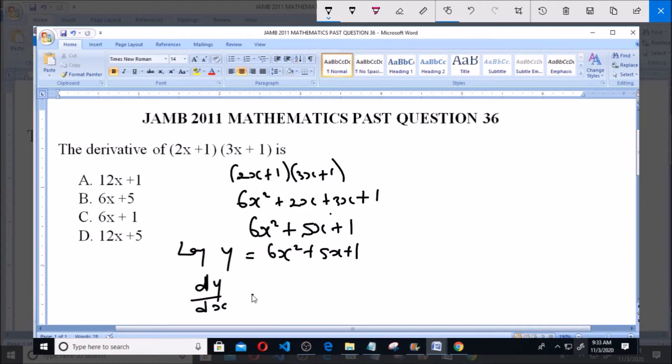2 multiplied by 6x raised to the power of (2 - 1) plus 1 multiplied by 5x raised to the power of (1 - 1) plus 0. This will equal 12x, because 2 minus 1 gives us 1, so 12x¹.